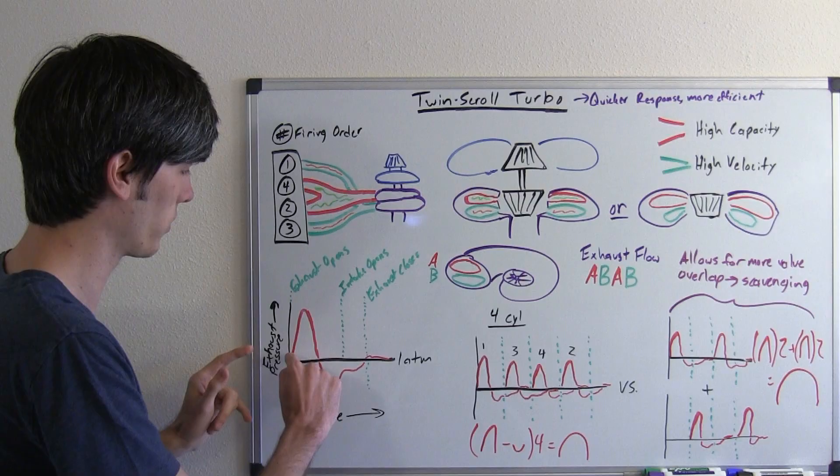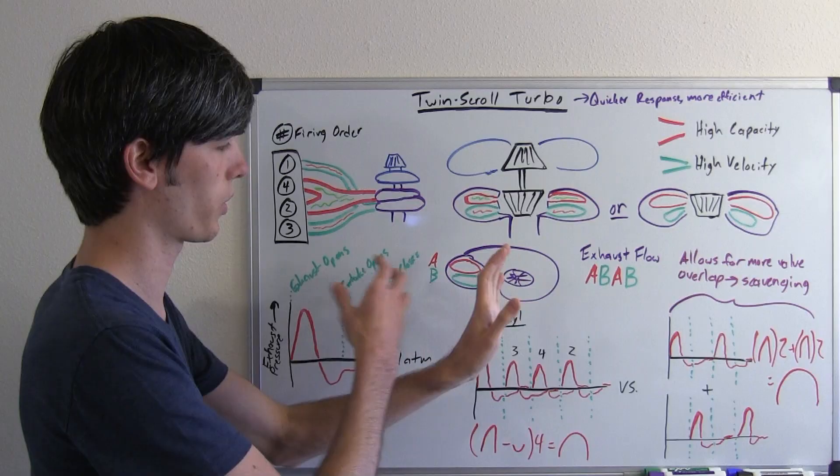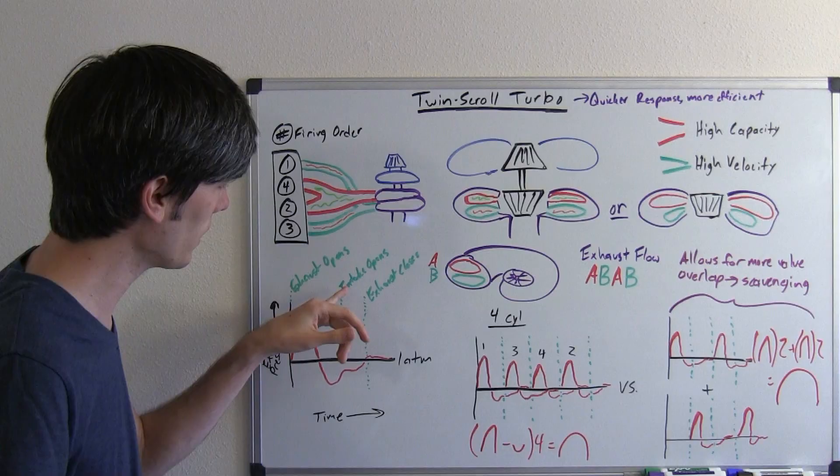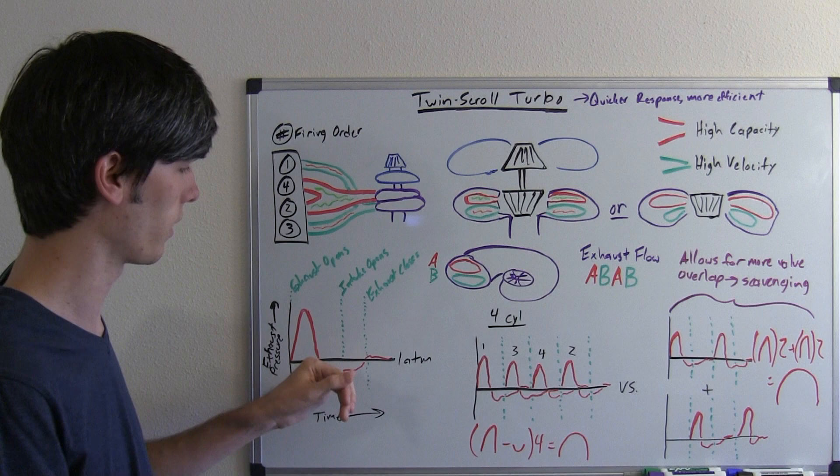So as that exhaust valve opens, the pressure quickly increases inside of the exhaust manifold. And then as that pressure wave travels, that pulse of exhaust travels, it's going to drop the pressure and it's going to have a low pressure area behind it. So that's going to cause this pressure drop here. Now your intake is going to open while your exhaust is still slightly open and this is your valve overlap. And so during this period there's going to be a slight amount of negative pressure in the exhaust manifold and then once the exhaust valve closes it's just going to go to atmospheric and level off.